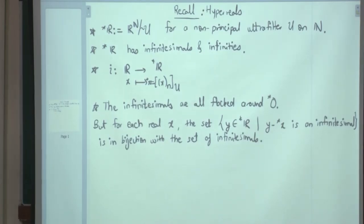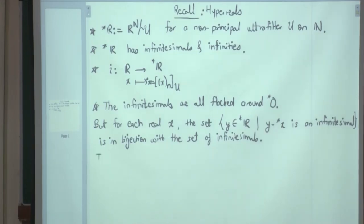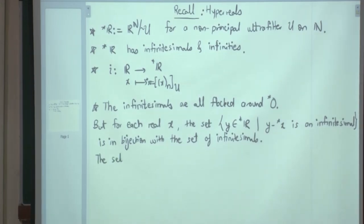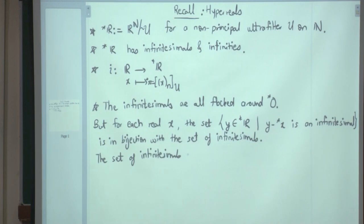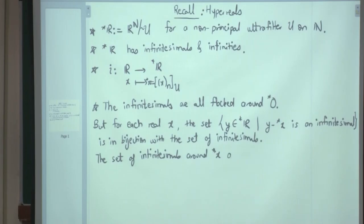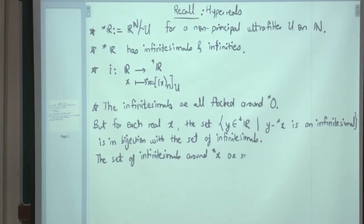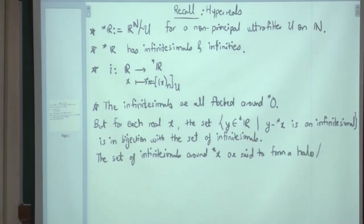These sets are called the set of infinitesimals around star x, and they are said to form a halo or a monad.